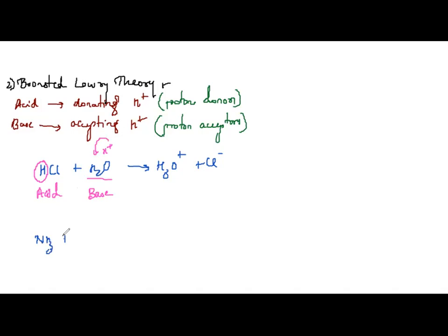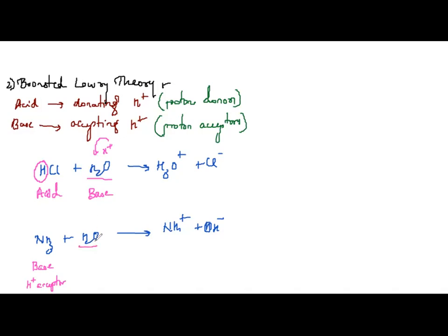Further examples: CH₃COOH + H₂O → CH₃COO⁻ + H₃O⁺. CH₃COOH gives H⁺ ion, so it is the acid; water accepts H⁺, so it is the base. CO₃²⁻ + H₂O → HCO₃⁻ + OH⁻. CO₃²⁻ is accepting a proton, so it is the base; water is giving the proton, so it is the acid.